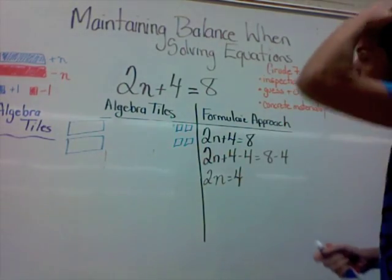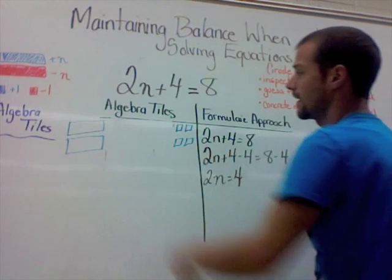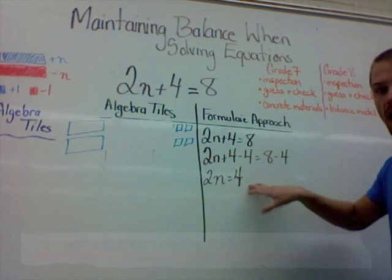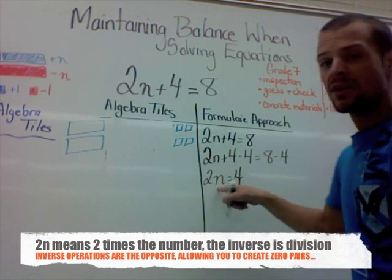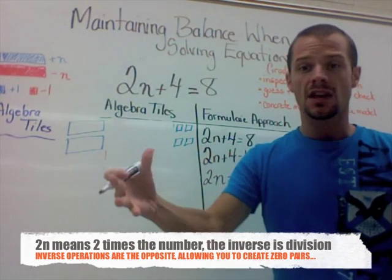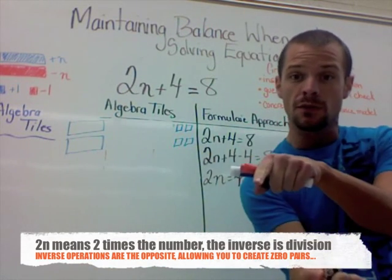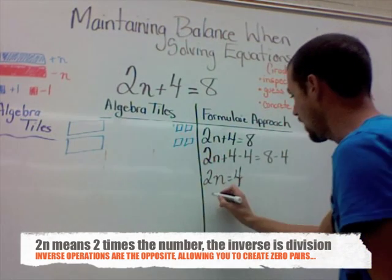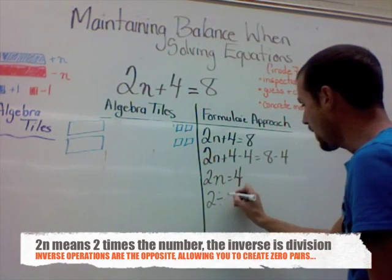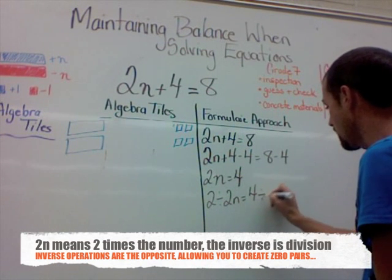So the next step now is, well now we have this 2n and we have 4. I want to figure out what 1n is. When we look at our algebraic expression, what we learned earlier is 2n really means 2 times the unknown number that we're trying to find. So if it's multiplication, then we have to do the inverse, the opposite, which means we have to divide. So let's do that now: 2 divided by 2n equals 4 divided by 2.